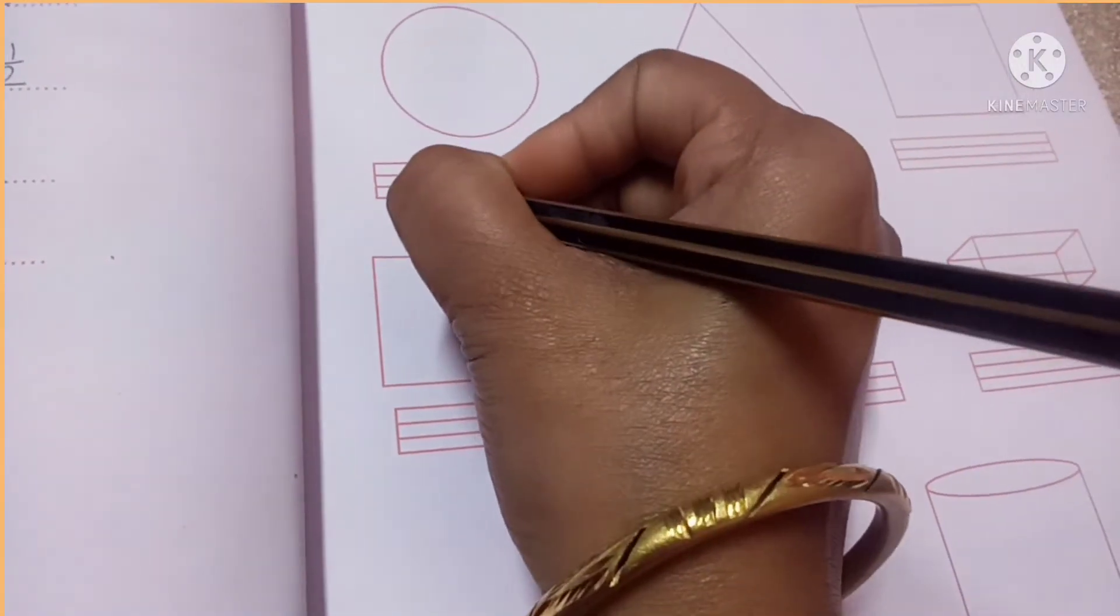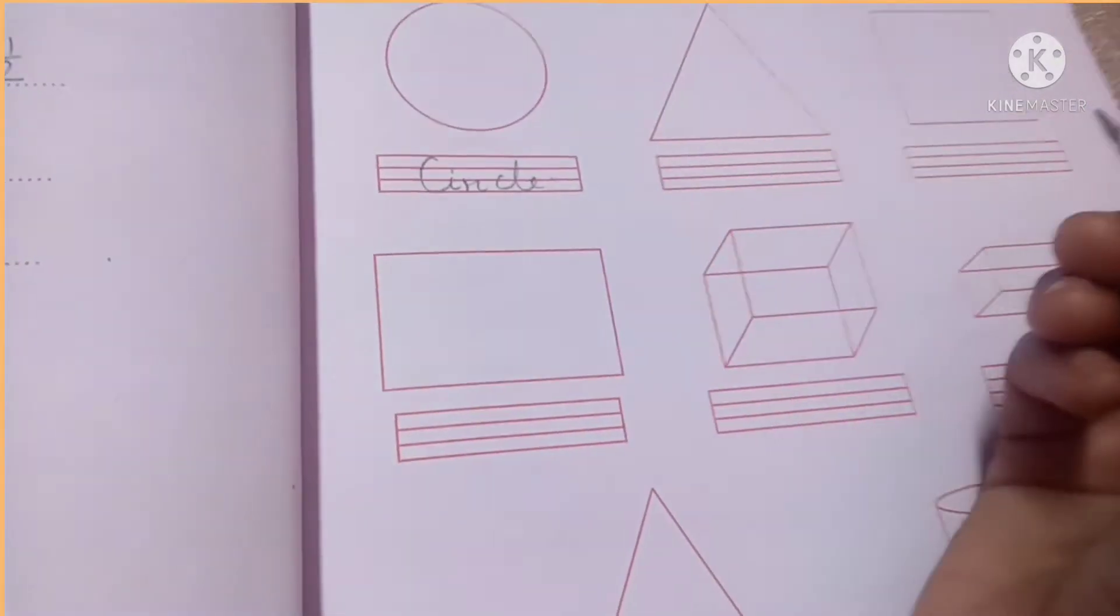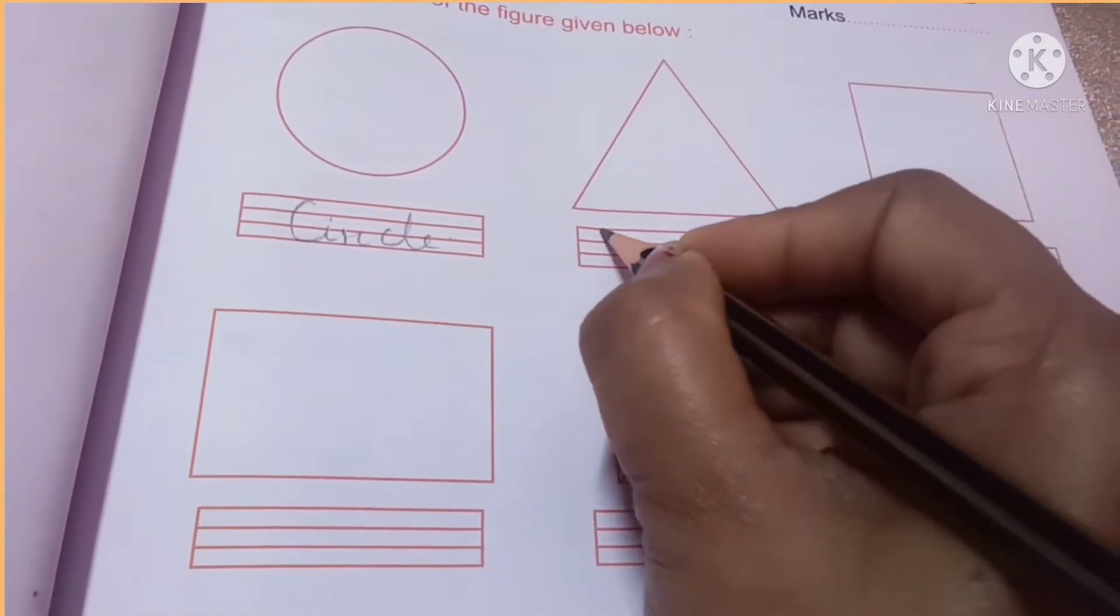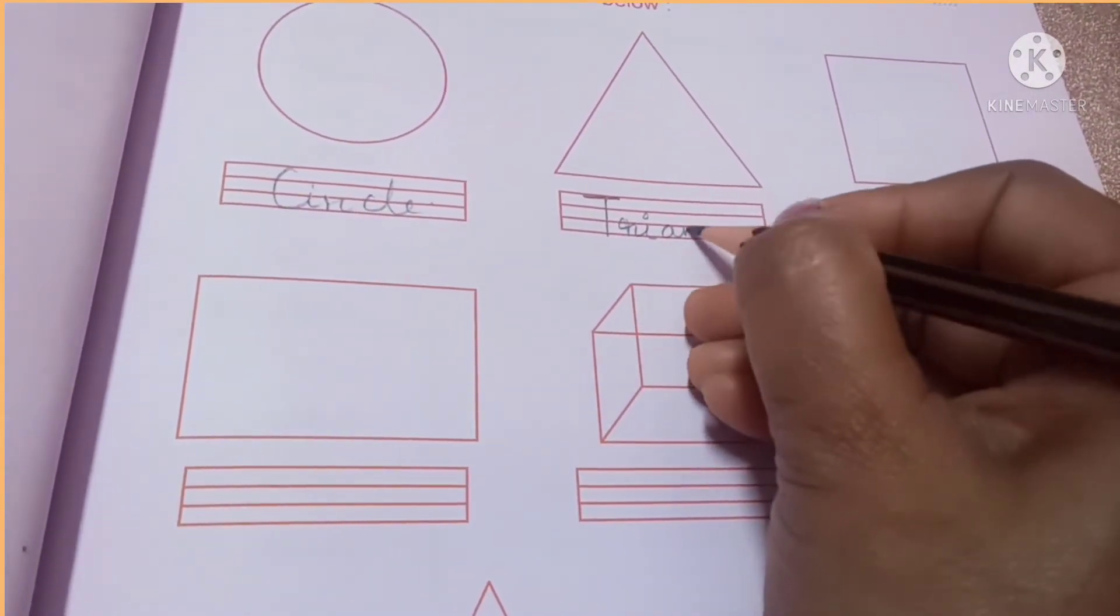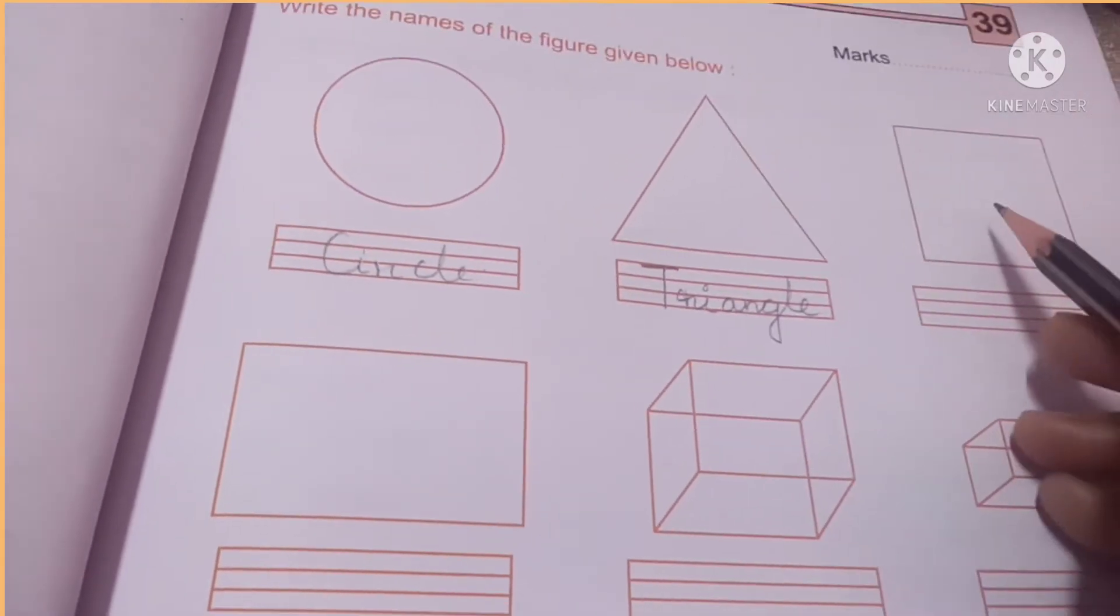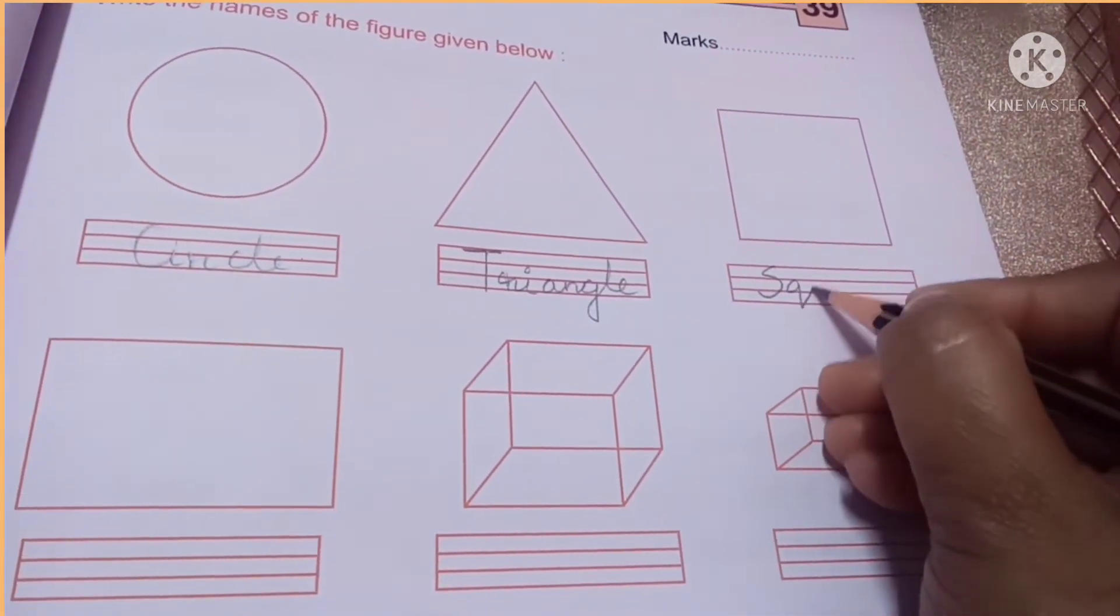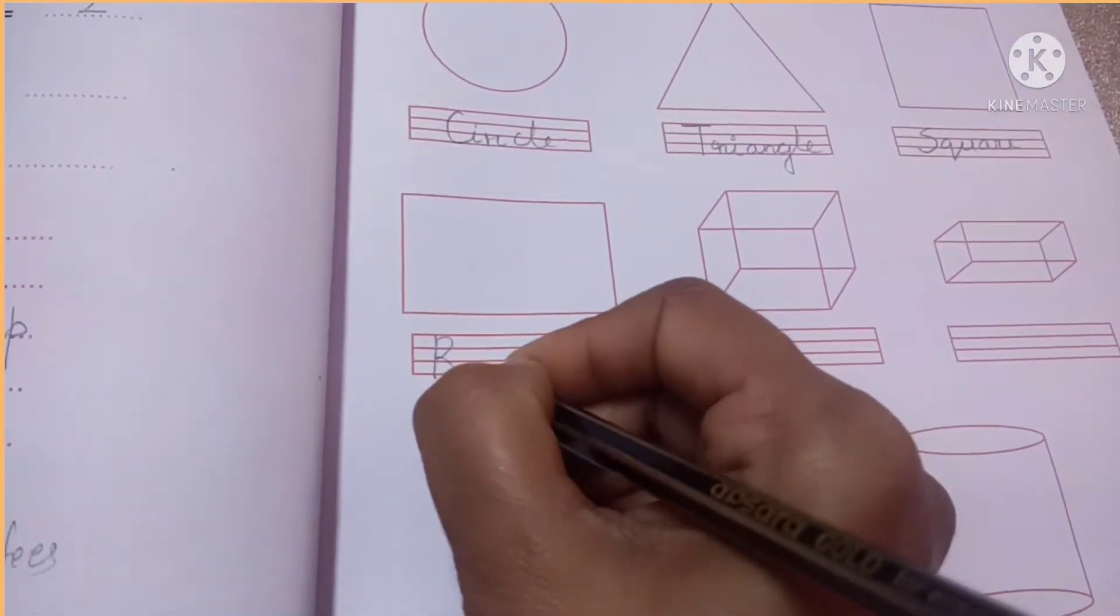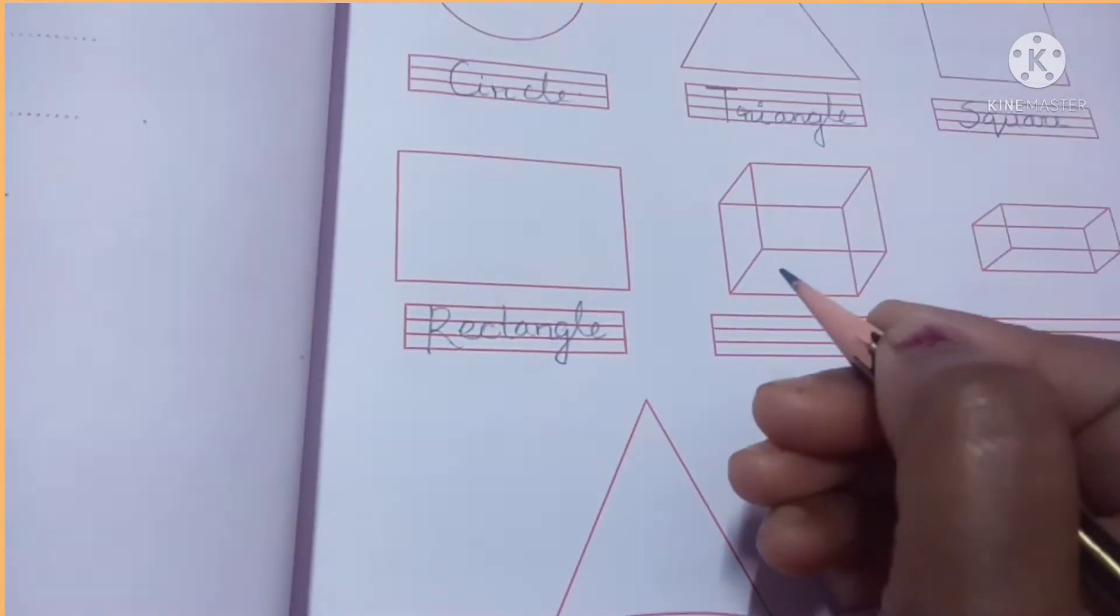The first one is circle. C-I-R-C-L-E. Circle. Now the next is triangle. As you can see here this figure is having three sides. So it is triangle. What about the third figure? This is square. S-Q-U-A-R-E. Next is rectangle. R-E-C-T-A-N-G-L-E. Rectangle.